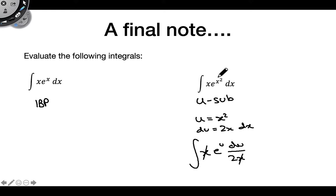The point is: just because you see a product, don't immediately start with integration by parts. Think first — can you do this with u-substitution or something easier? U-substitution tends to be arithmetically easier. Don't forget to always look for other techniques, just like you'd multiply out before using the product rule if it's simpler. Consider every possible integration technique.